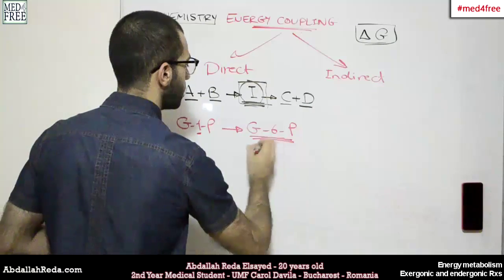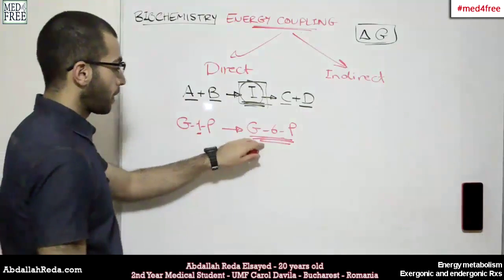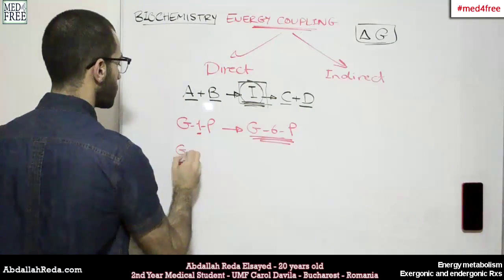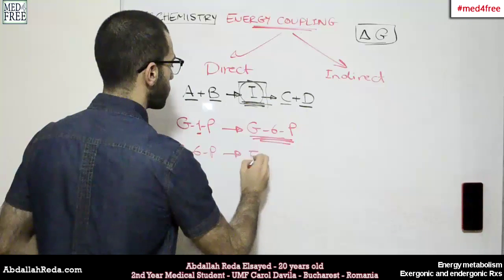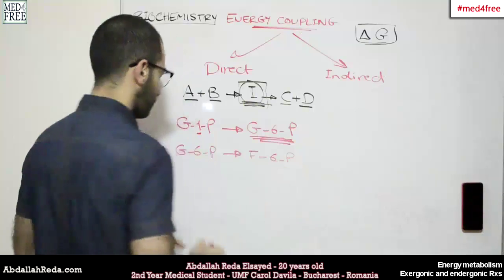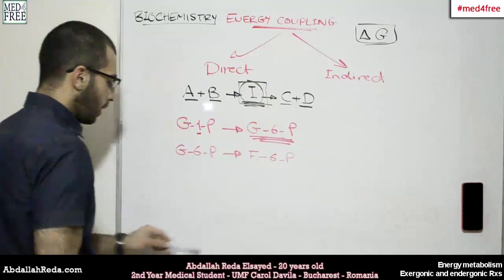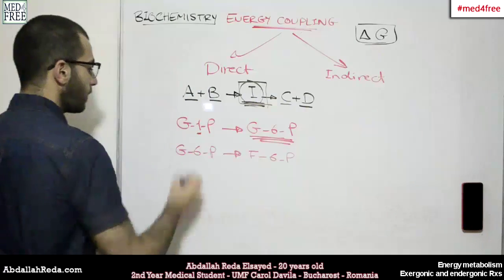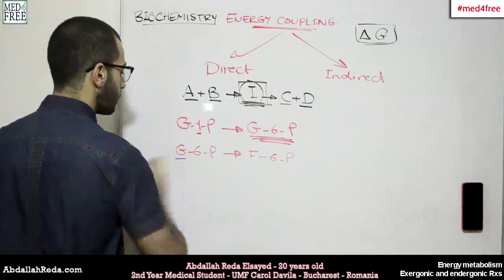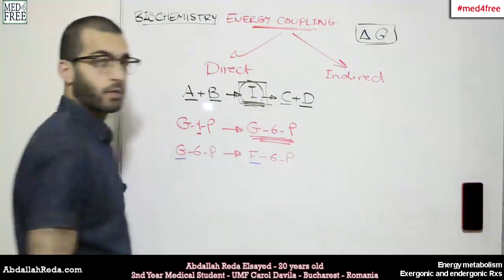And then we have this intermediate compound with glucose 6-phosphate. So glucose changed into fructose 6-phosphate.